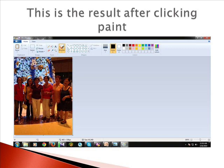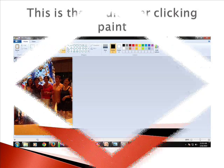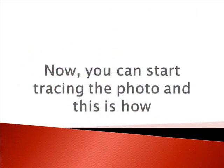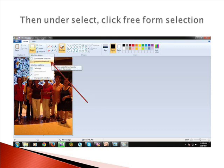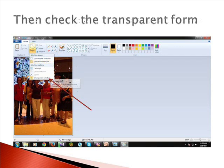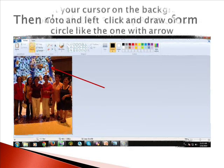This is the result after clicking Paint. Now you can start tracing the photo, and this is how. In the home tab of Paint, click Select. Then under Select, click Free Form Selection. Then check the transparent form.